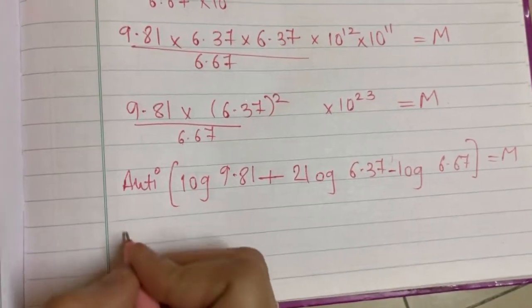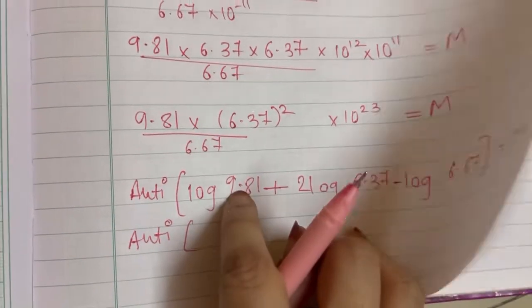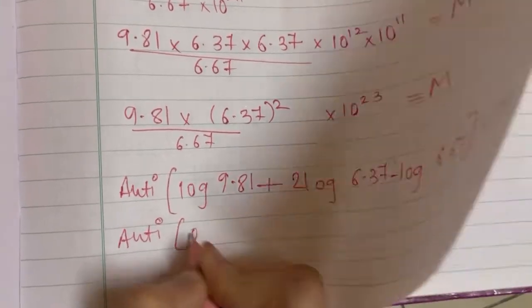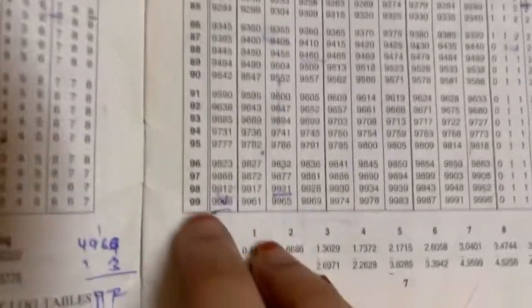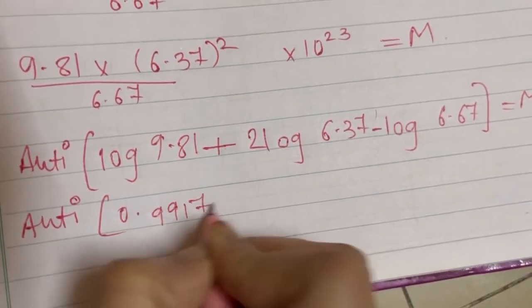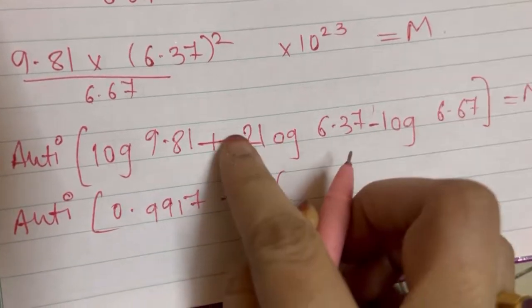Now just apply the log, if you notice there is just one digit before point, so 0 point. Now 98 ka 1, you will look for 98 ka 1, that is 9917, so you will write 9917 plus this 2 as it is.